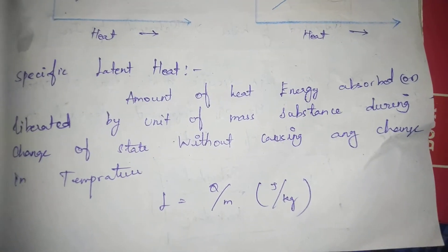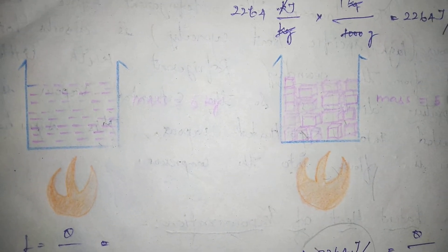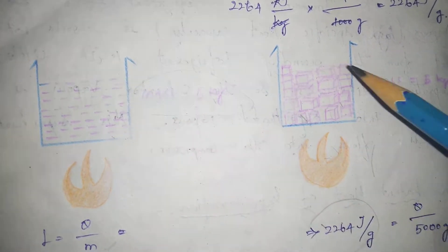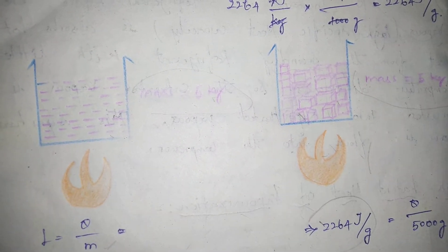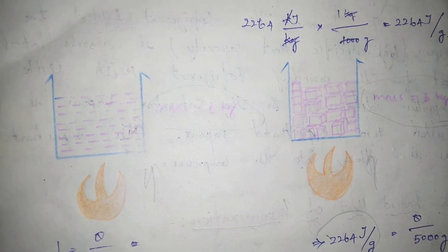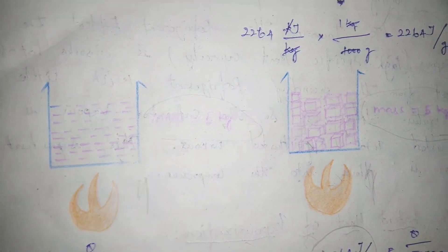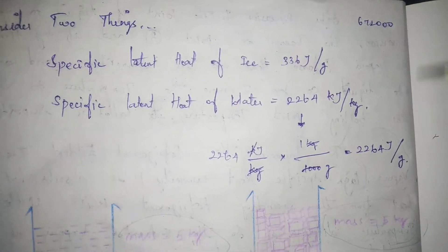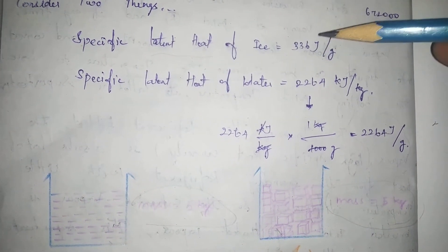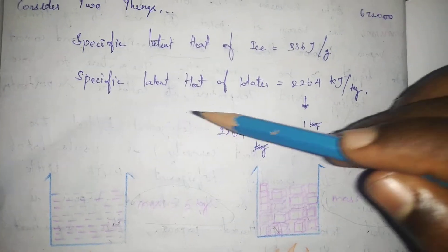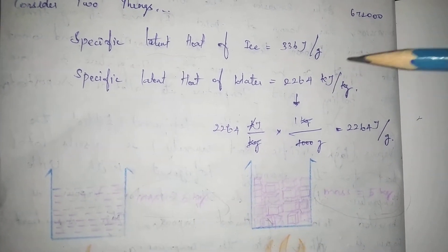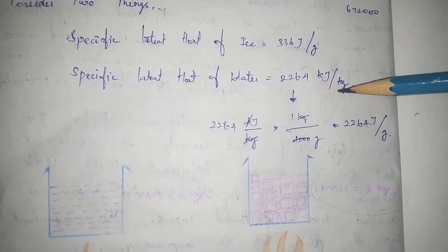What we know about latent heat: the formula is L equals Q divided by M. We will look at a simple example. We are taking two things — one is water with a mass of 5 kg, and the other is ice cubes also with a mass of 5 kg. We apply the same amount of heat to both.